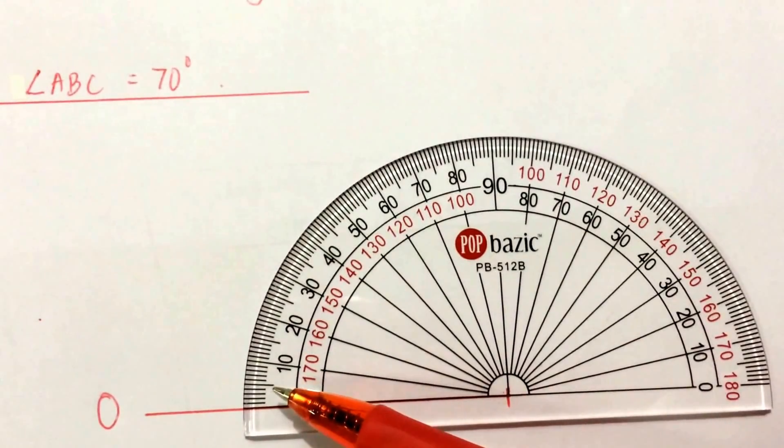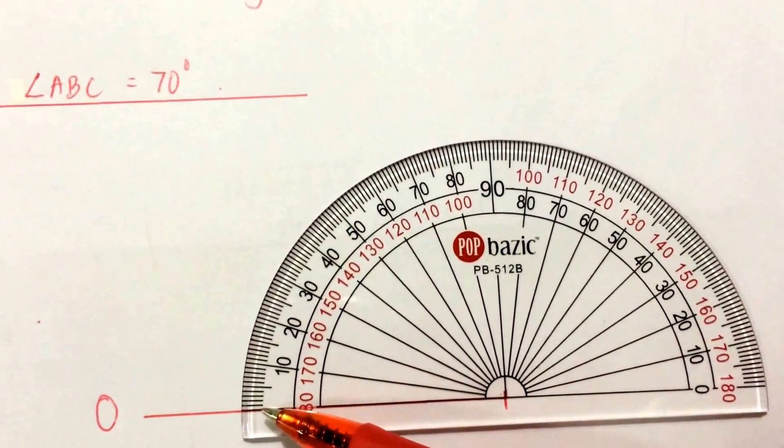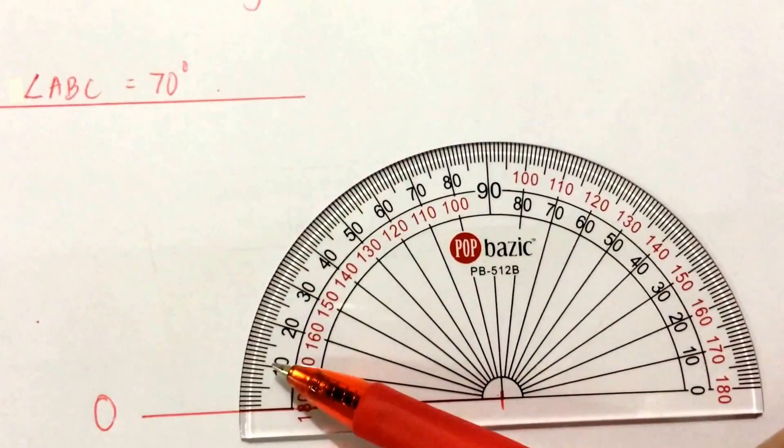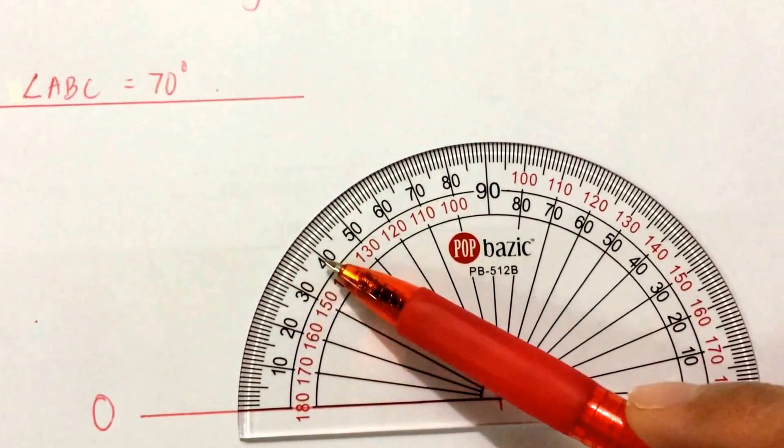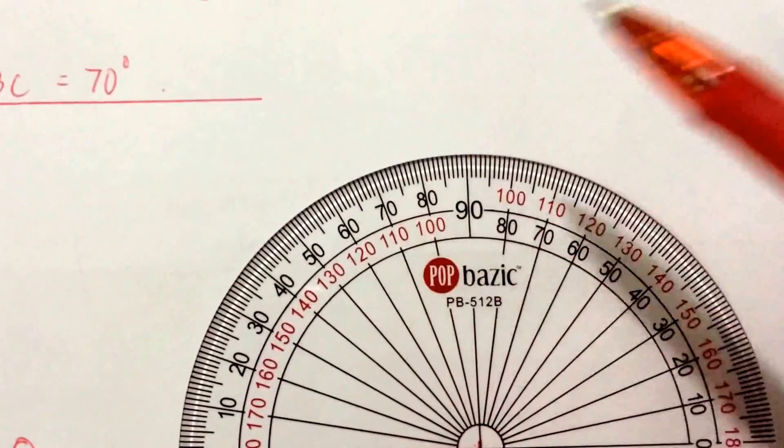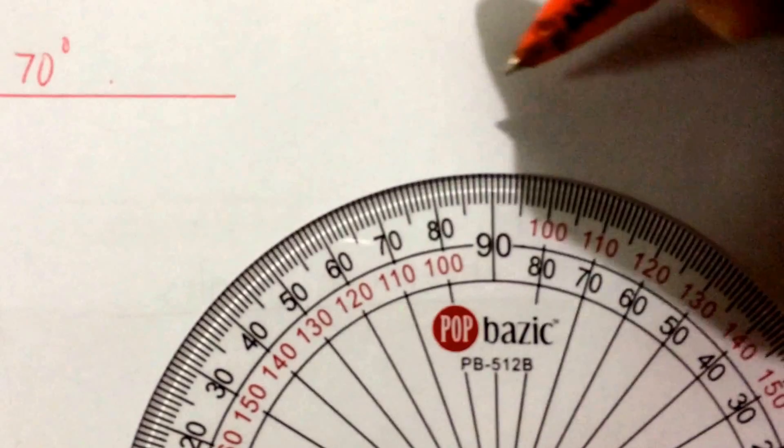I want an angle that is 70 degrees, so I'm going to start counting zero, then 20, 30, 40, 50, 60, 70. I will make a mark.